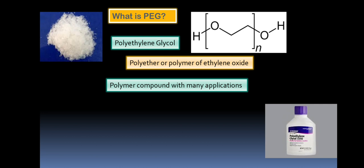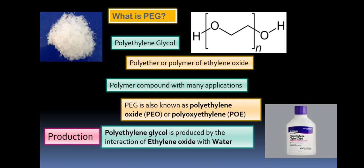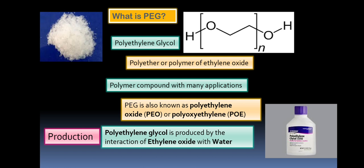This polymer component is having so many applications. This PEG is also known as polyethylene oxide or polyoxyethylene. Production is very simple. Polyethylene glycol is produced by the interaction of ethylene oxide with water. Ethylene oxide acts as a monomer and when it reacts with water, it forms polyethylene glycol.